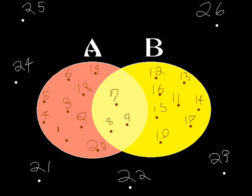Take for instance this Venn diagram which has sets A and B. You have a total of 26 points.